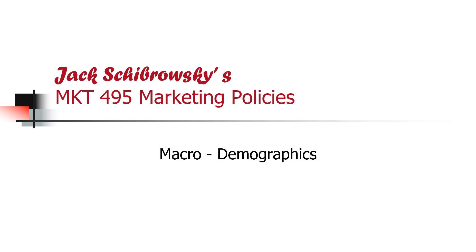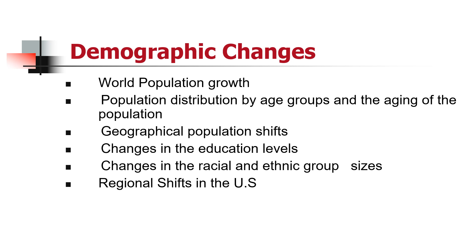Let's talk about demographics as one of our first issues to discuss in the macro environment. Demographic changes that marketers are concerned about include world population growth, population distribution by age group and the aging of the population, geographical population shifts — we see a general shift out of the Rust Belt states and towards the west and southwest — changes in education levels, changes in the racial and ethnic makeup of groups, and regional shifts within the United States.